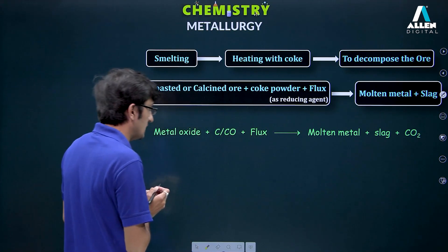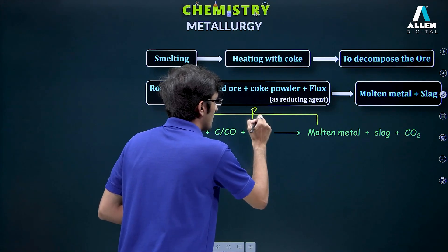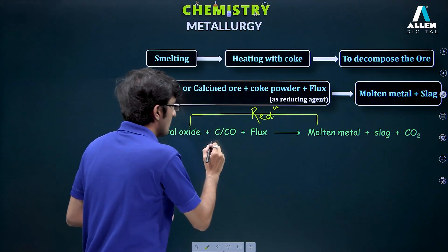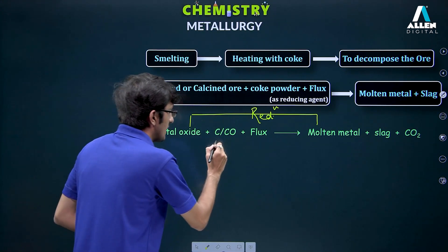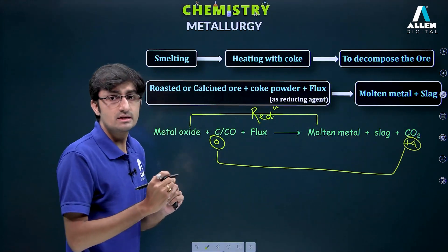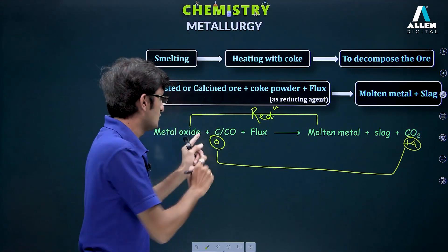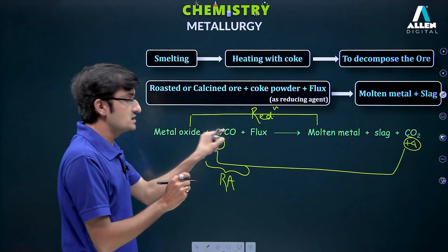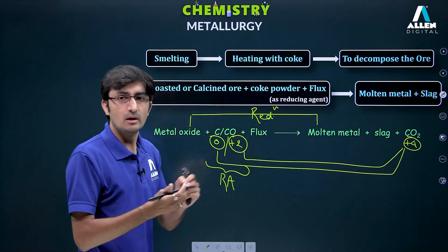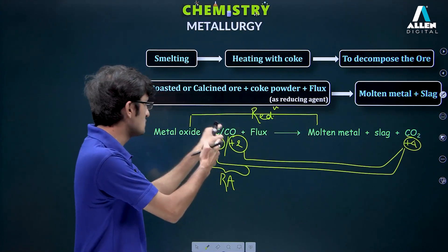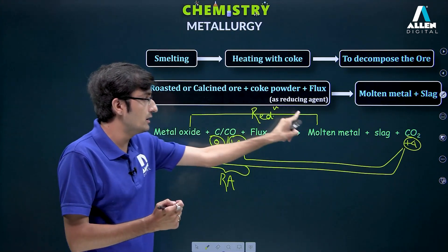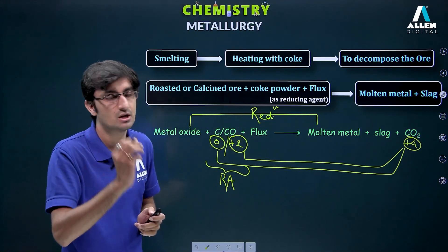From metal oxide we need to obtain metal — this process is reduction. Something must be causing the reduction, so our reducing agent should be C or CO. Carbon's oxidation state here is zero, going to +4 in CO₂ — it oxidizes itself and reduces others, so it acts as a reducing agent. For CO, carbon's oxidation state is +2, going to +4 — again, it oxidizes itself and reduces others, reducing the metal oxide to molten metal.